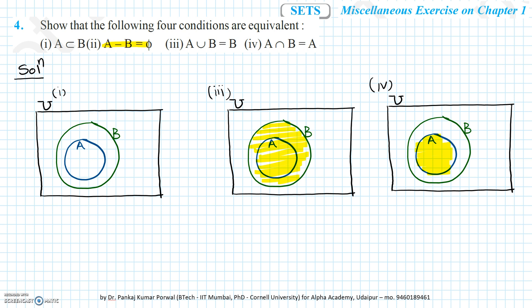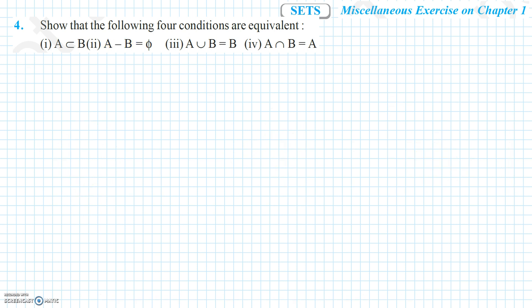Next we will use a mathematical proof. I will prove that the first condition implies the second, the first implies the third, and the first implies the fourth. So first I will prove that condition 1 implies condition 2.